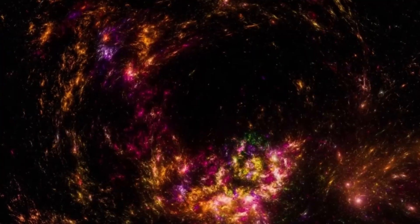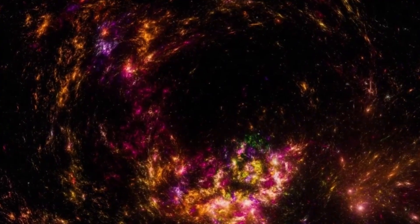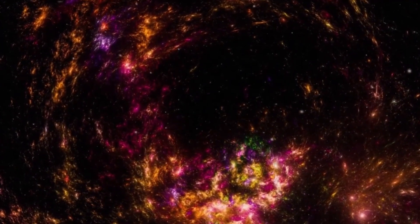As Betelgeuse approaches the final stages of its life, its pulsations and convective activity grow increasingly intense. The depletion of its nuclear fuel sets the stage for a dramatic supernova explosion, marking the end of its existence as a red supergiant.